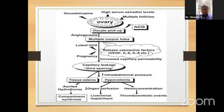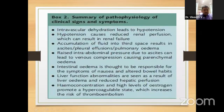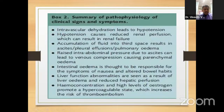To summarize the pathophysiology: there is intravascular dehydration leading to hypotension, which causes reduced renal perfusion and can result in renal failure. Fluid accumulates in the third space causing ascites, pleural effusion, and pulmonary edema. Raised intra-abdominal pressure due to ascites leads to venous compression causing intestinal edema, altered bowel habits, and altered LFT. Hemoconcentration and high estrogen levels promote a hypercoagulable state, increasing the risk of thromboembolism.